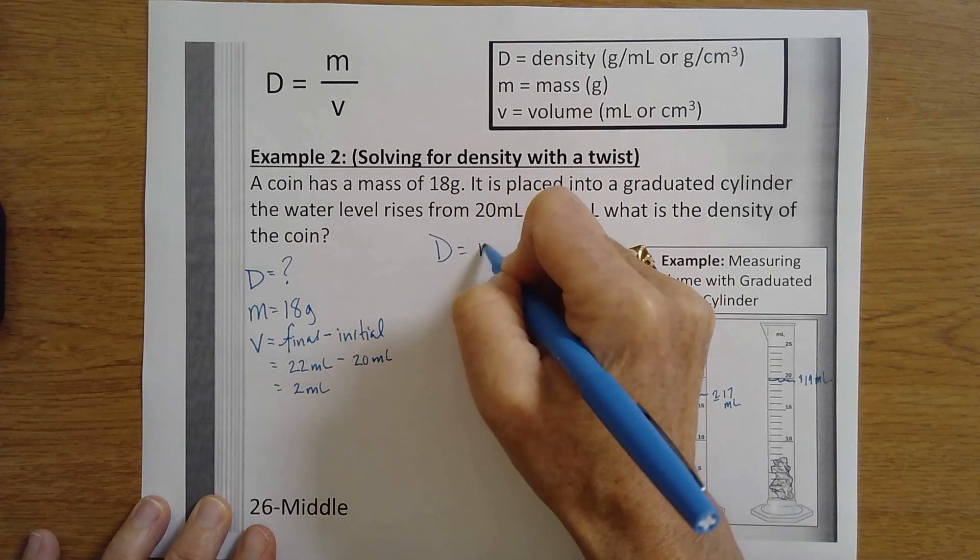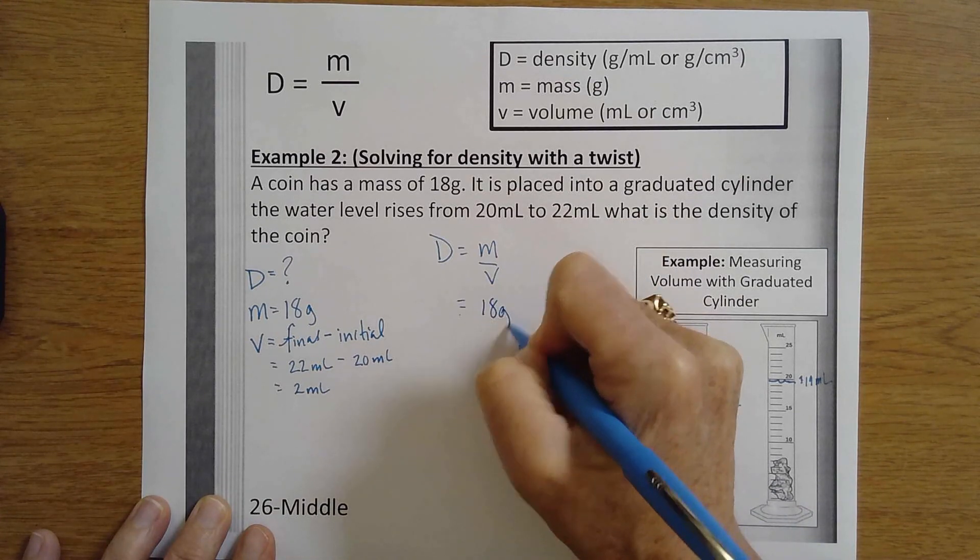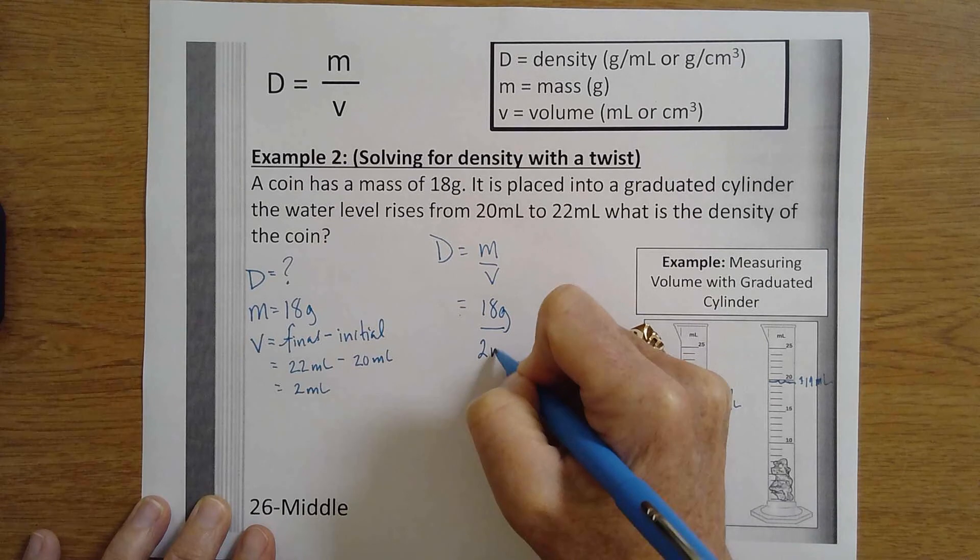Now it's all the same. Density is equal to mass over volume. The mass is 18 grams divided by my volume, which is 2 milliliters.